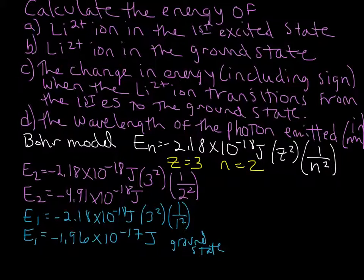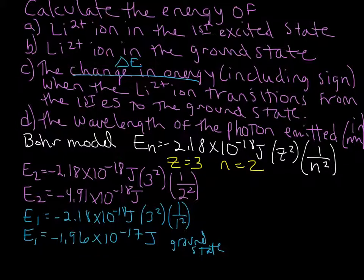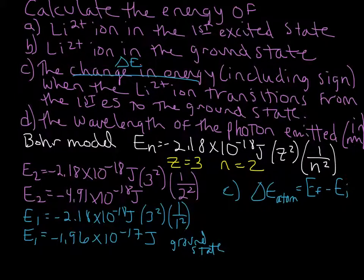For part C, we're going to calculate this change in energy — that's delta E — the energy difference between the two states as the ion transitions from the first excited state, n equals 2, to the ground state. We're going to use delta E atom, even though this is an ion, and that's going to be E final minus E initial. We'll do that on the next slide and write down our values we have so far.